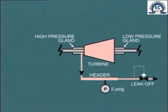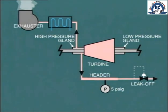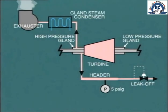In order to prevent this steam from getting into the turbine room, it is drawn from the outside of the gland seal by a slight vacuum, which is produced by the gland steam exhaustor. Some heat is recovered from this small amount of steam by passing it through a heat exchanger in the condensate system known as the gland steam condenser.